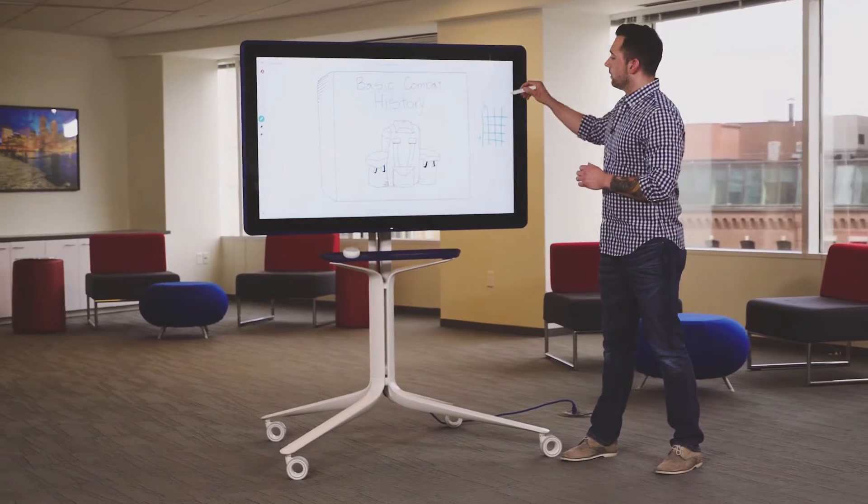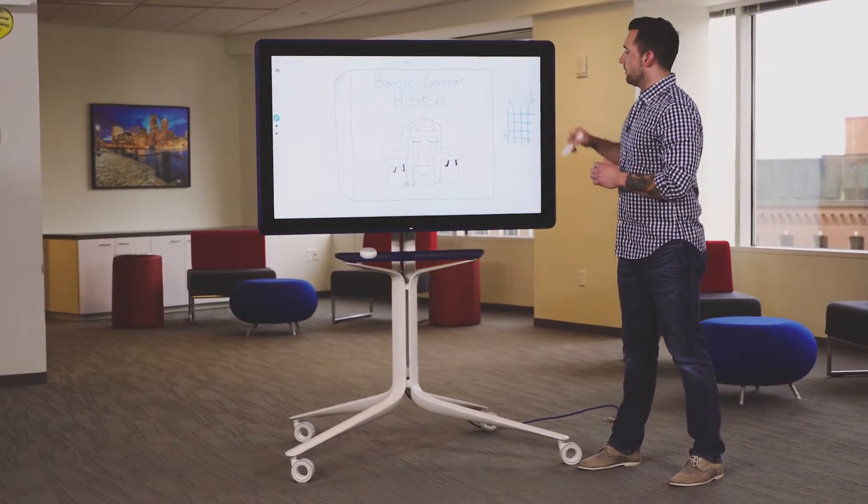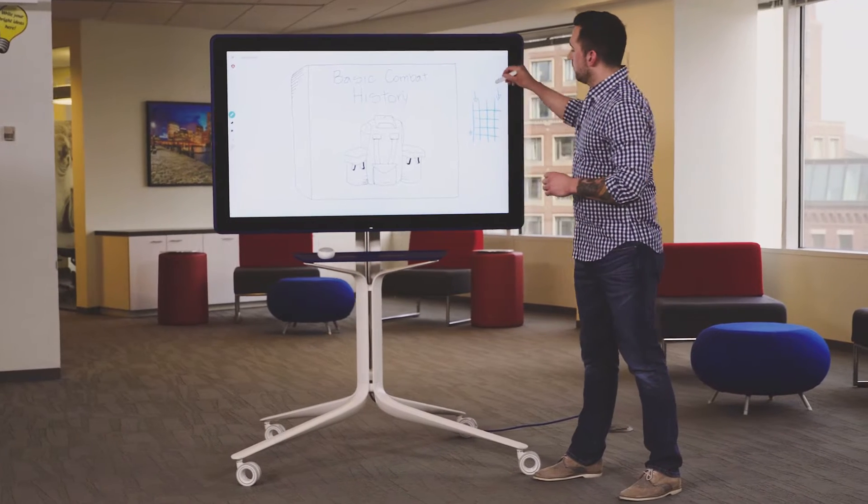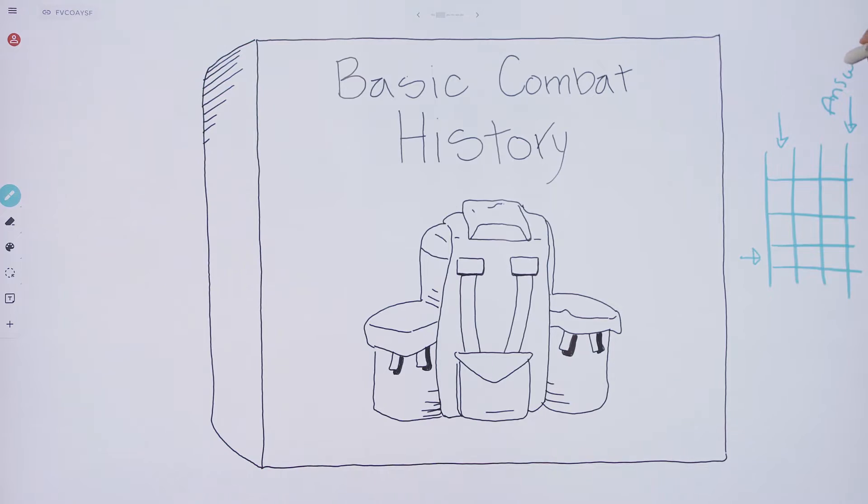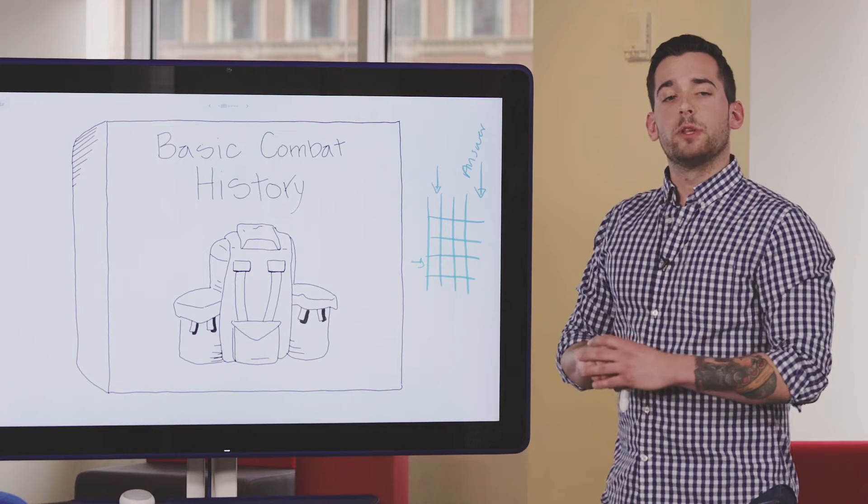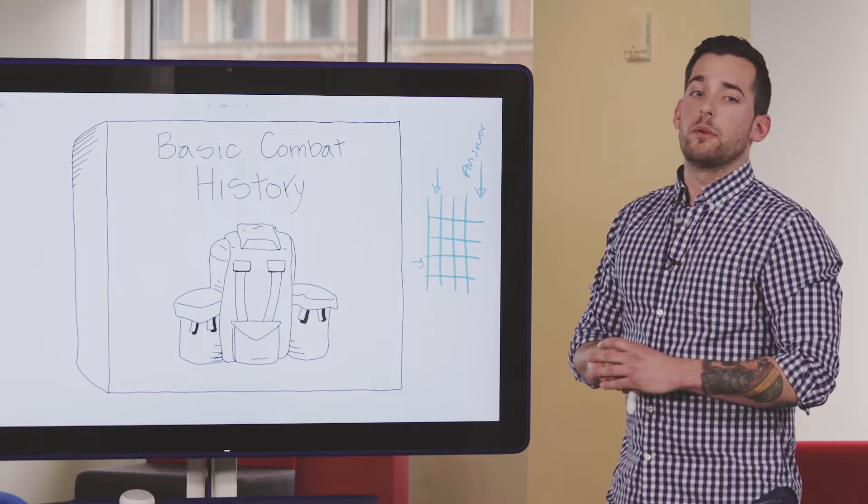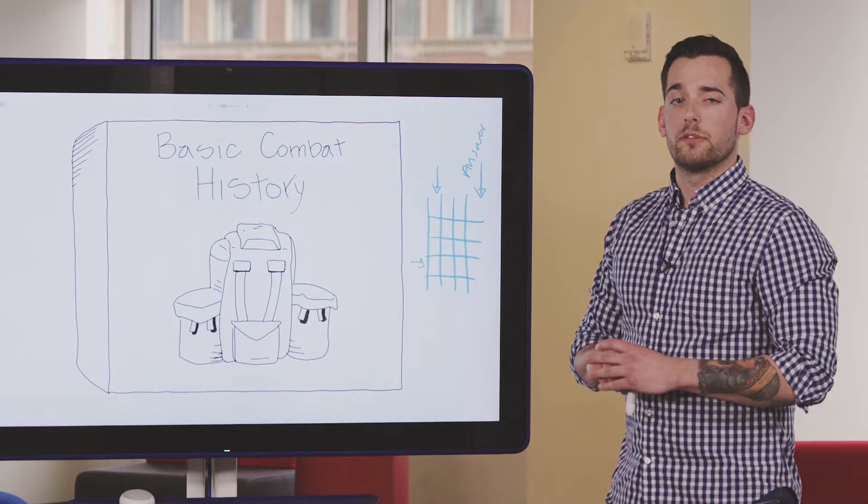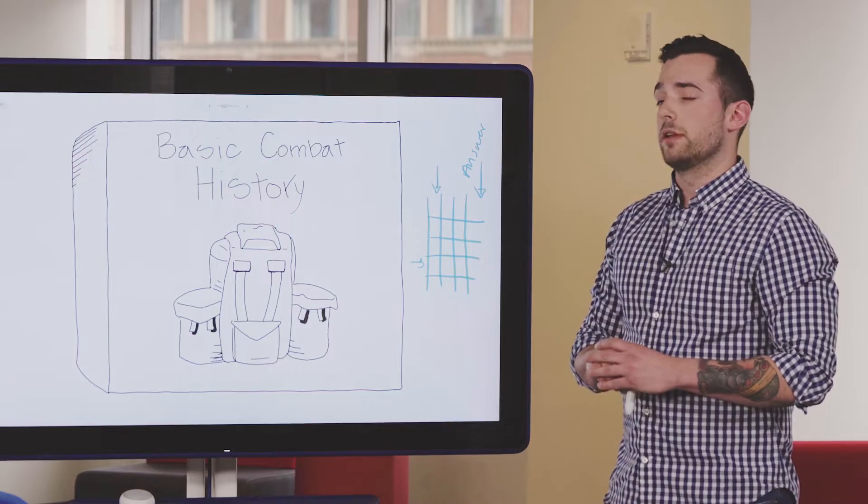The labeled aspect of this comes in when we actually give the algorithm the answer to the question. So we have to give the algorithm how fast that particular soldier ran during their PT test. And this is really going to allow that algorithm to uncover all of the insights that we need and all of the relationships between the different data points within our training data set.